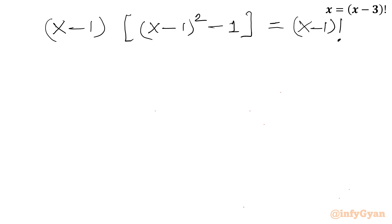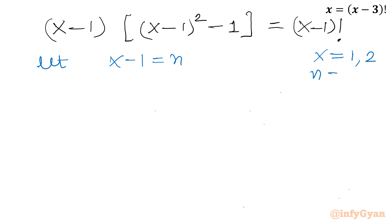Now I will consider the substitution x - 1 = n. The condition that x cannot equal 1 and x cannot equal 2 translates to n cannot equal 0 and n cannot equal 1. Substituting, our equation becomes n times (n² - 1) equals n!.